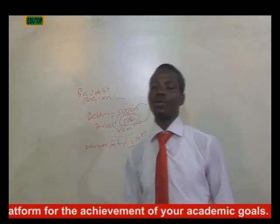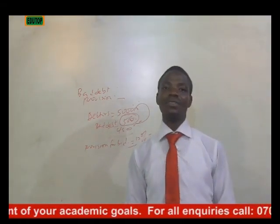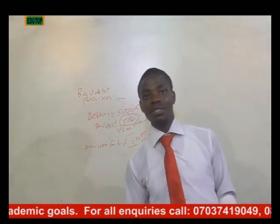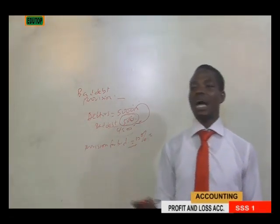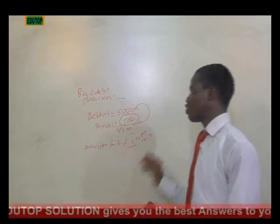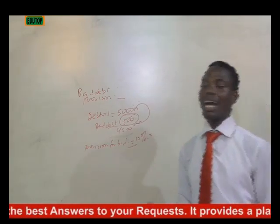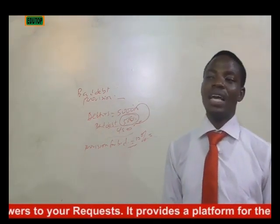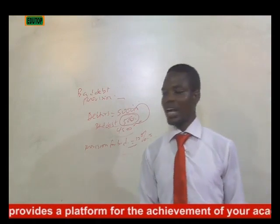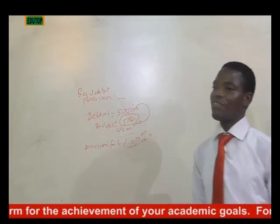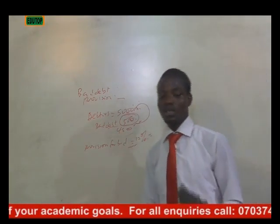Another item is provision for discount on debtors. We have discount allowed and discount received: discount allowed is debited while discount received is credited. If a provision for discount is given in the additional information, it is related and associated with debtors. Any discount on the debtor side is discount allowed, and any discount on the creditor side is discount received. If discount allowed appears in the additional information, you deduct it from debtors and record it as an expense in the profit and loss account.